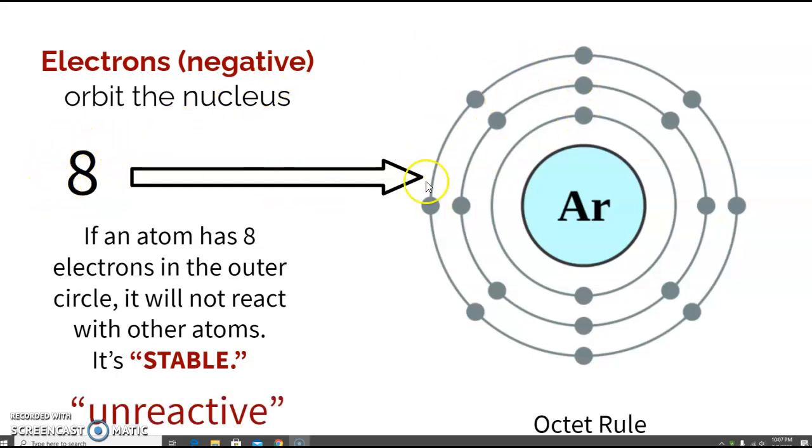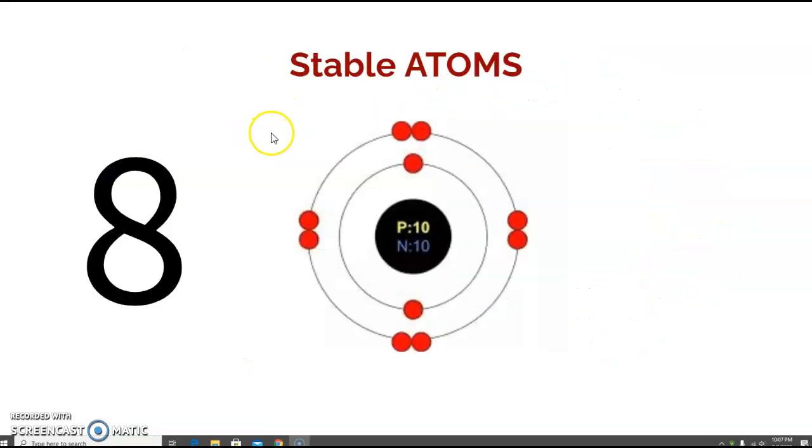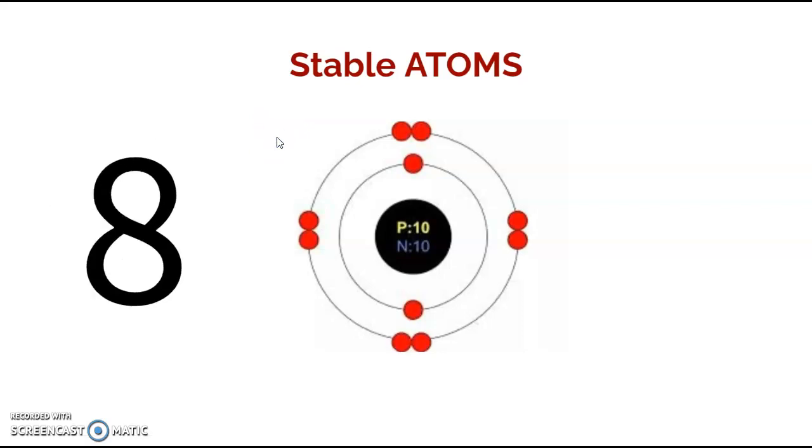So if you have eight, you are stable. Sometimes this is called the octet rule; you might hear that in a video or read it in some of the notes later in this unit. So eight is a stable atom.